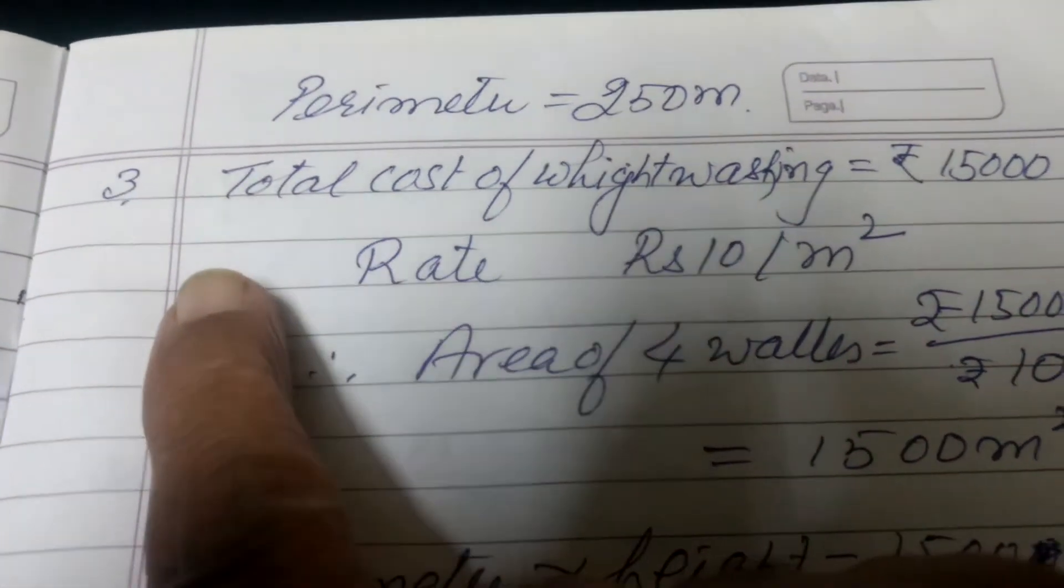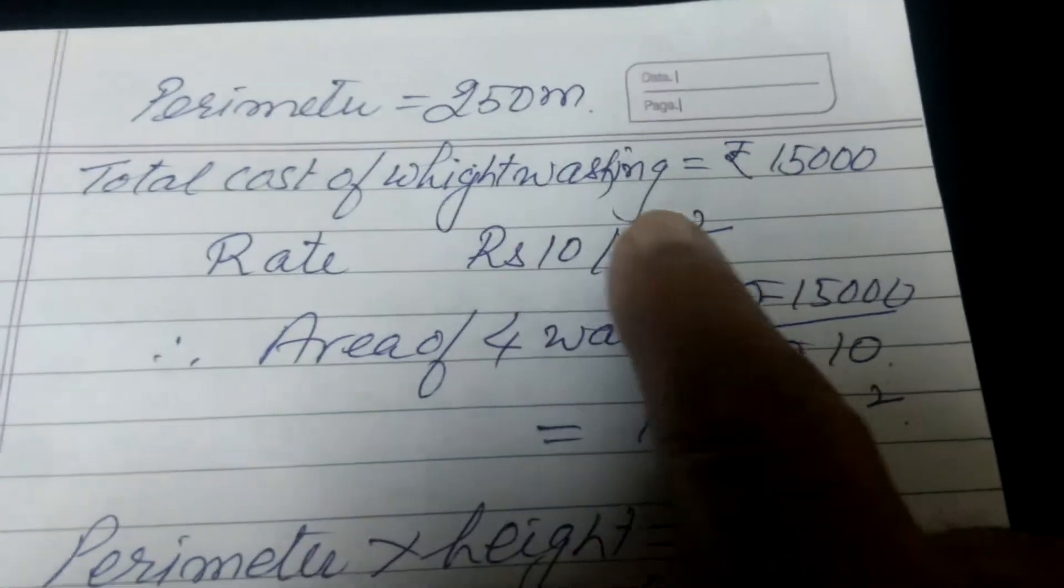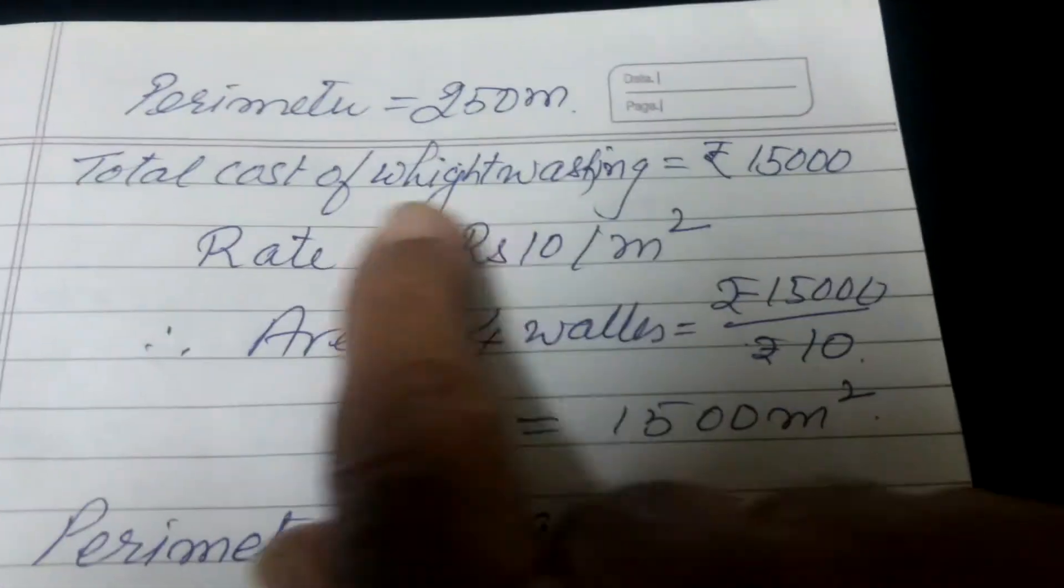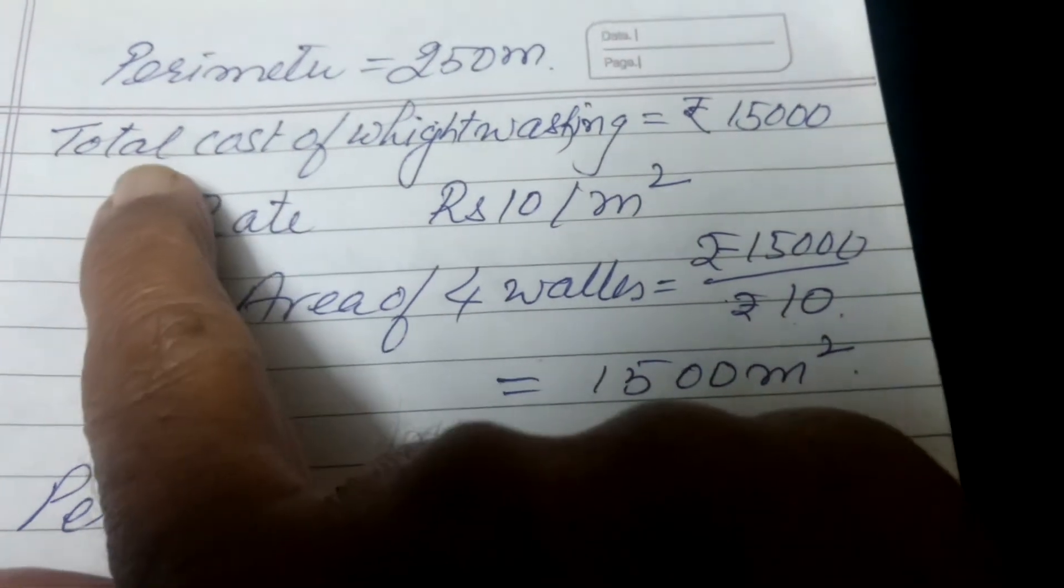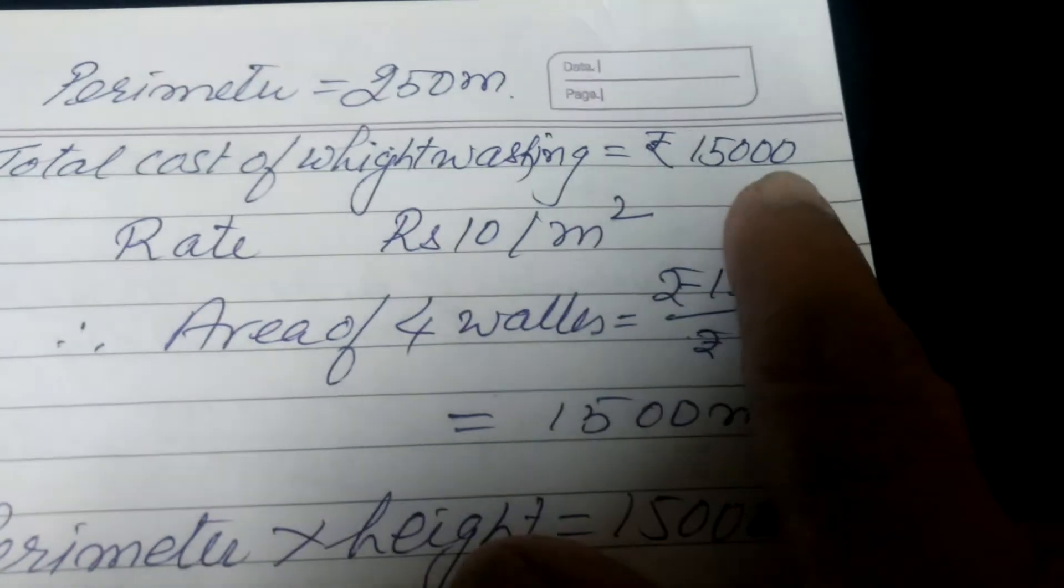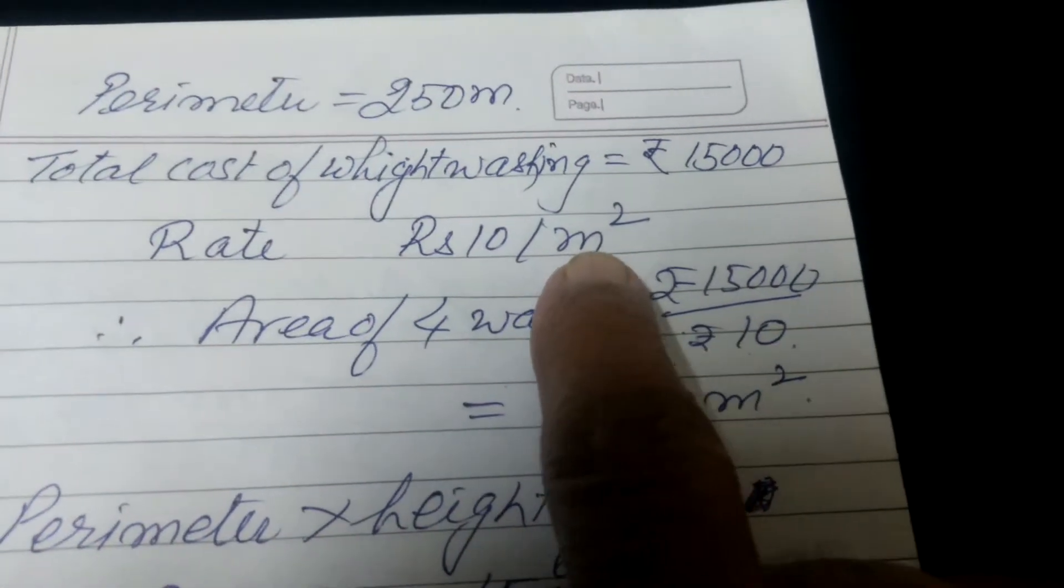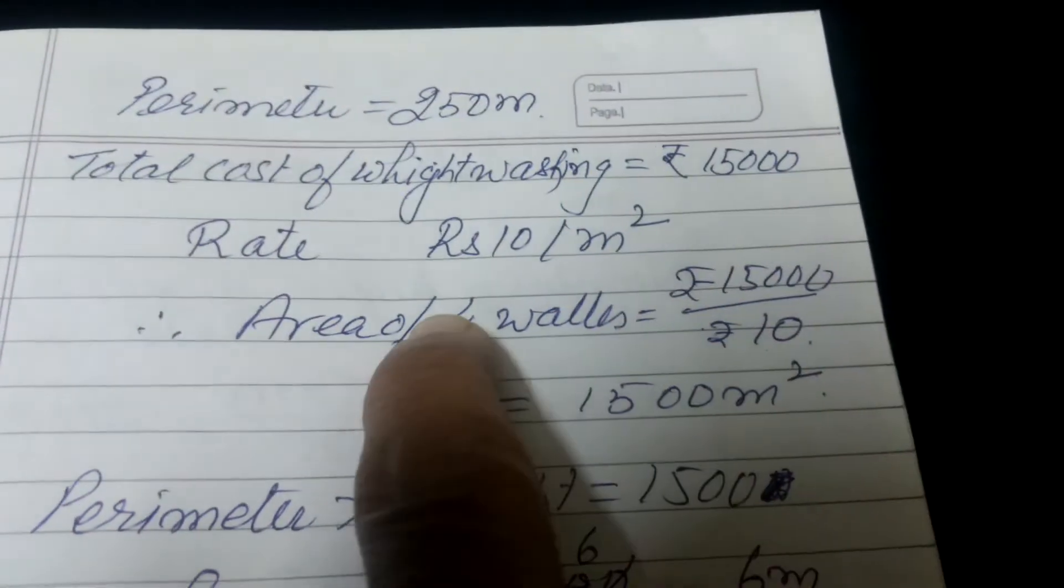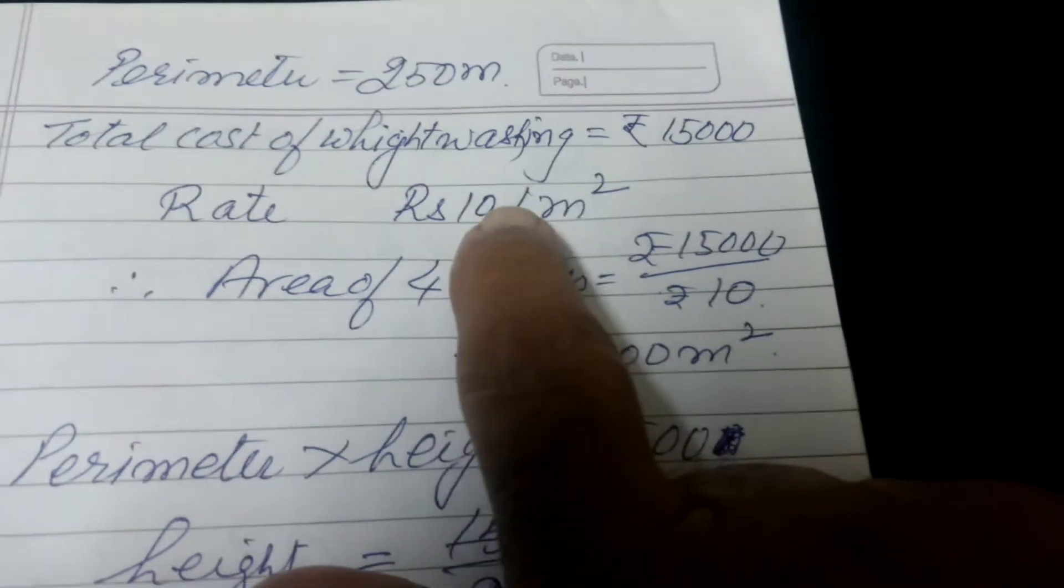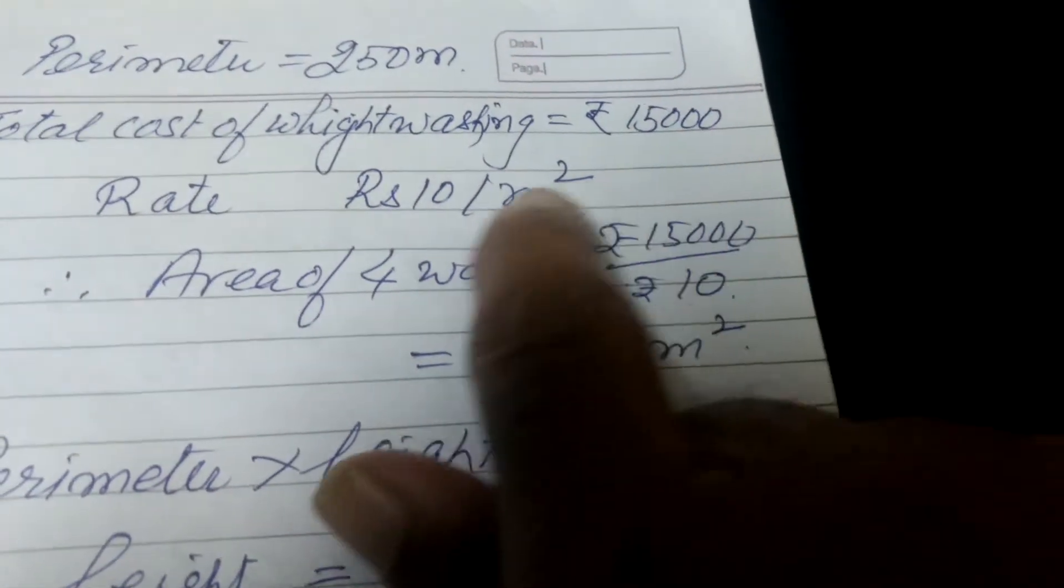Question number 3. We are given that the total cost of whitewashing is Rs. 50,000. Whitewashing is made of 4 walls, so the total cost of 4 walls is Rs. 50,000. The rate is Rs. 10 per meter square. If we divide the total cost by Rs. 10...